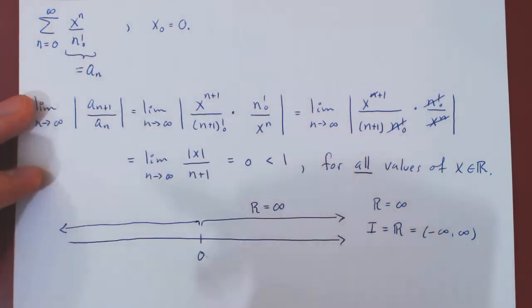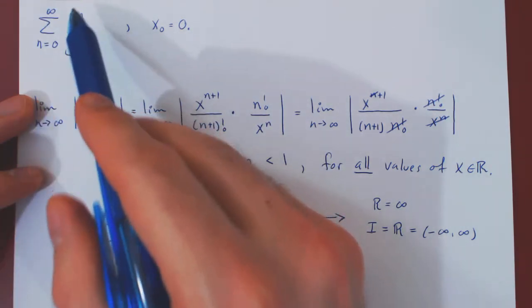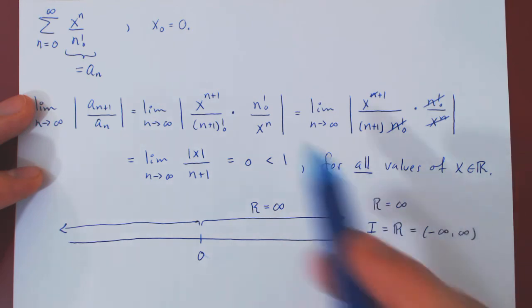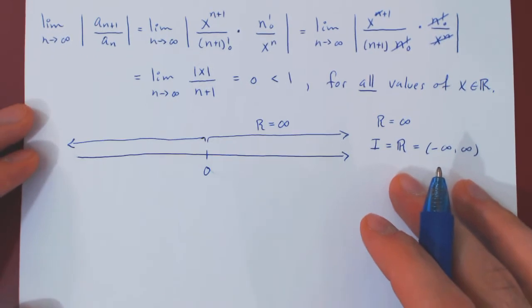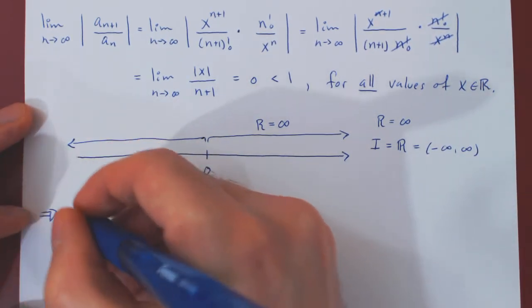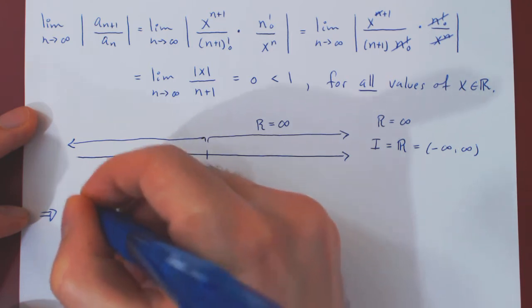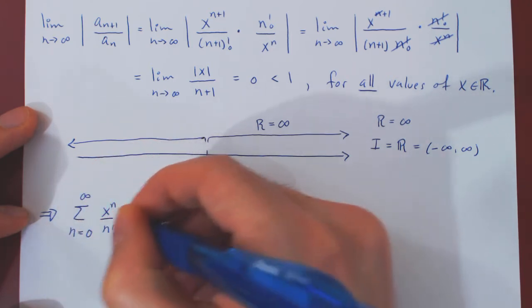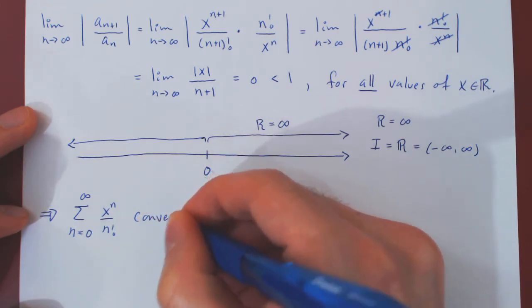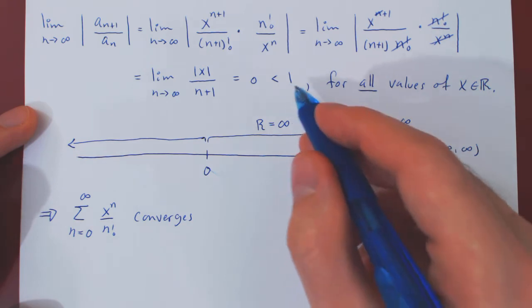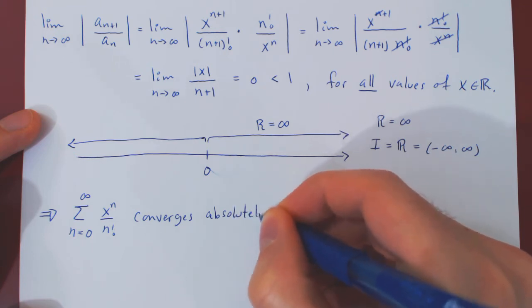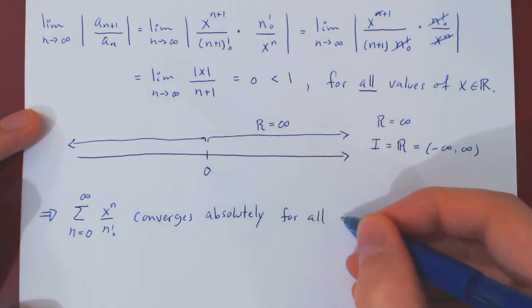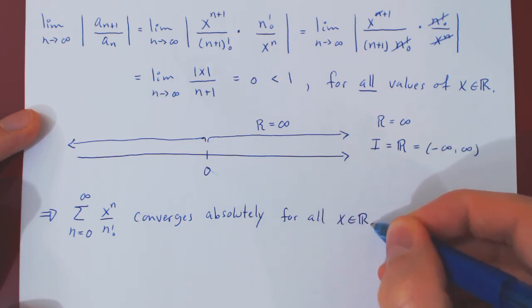So this really is, in a sense, a dream power series. This is a function whose domain is the entire real line because this power series converges for all values of x, and this is our conclusion. And of course, not only convergence, but absolutely because of the ratio test.